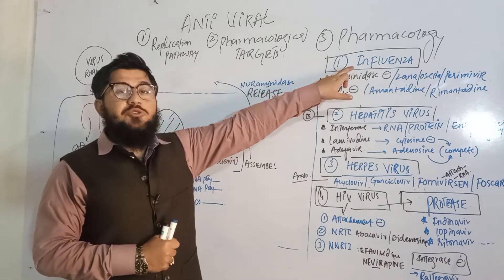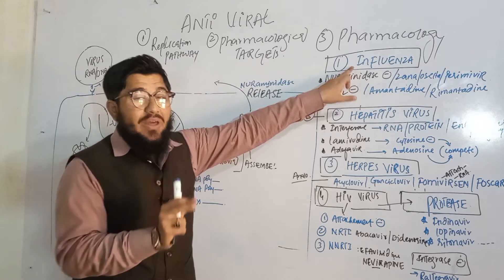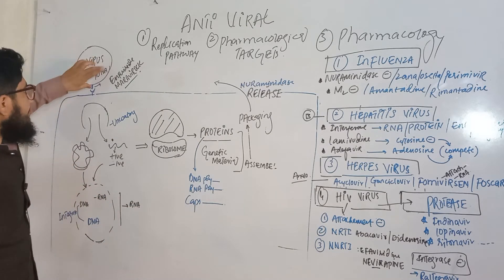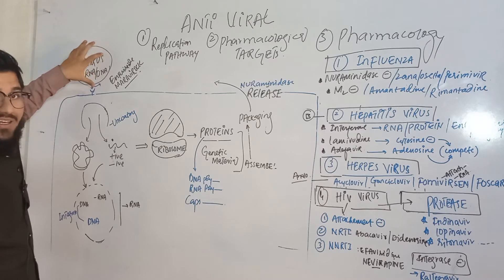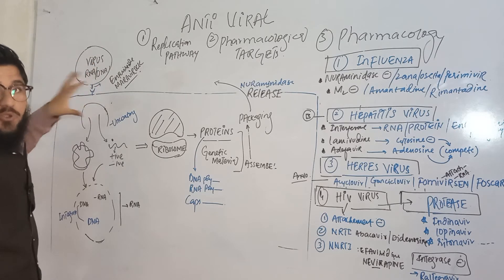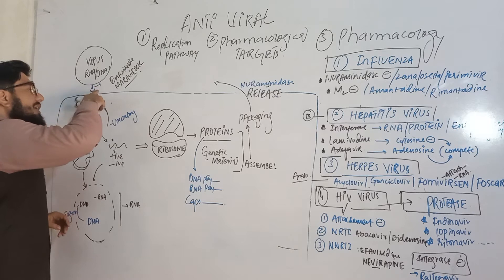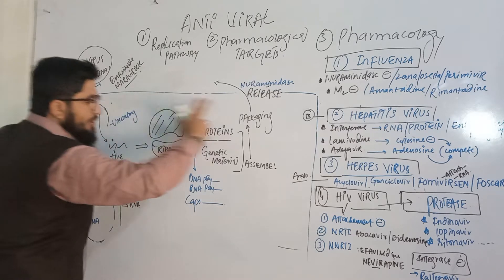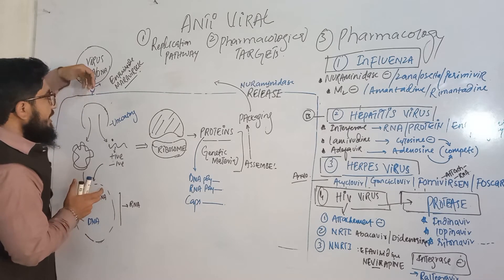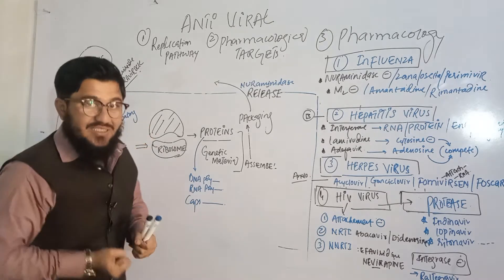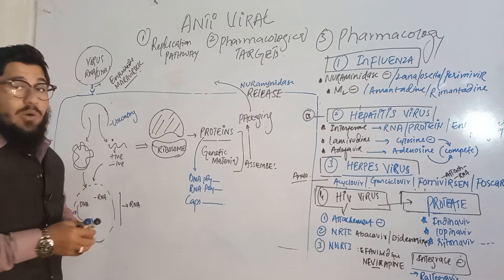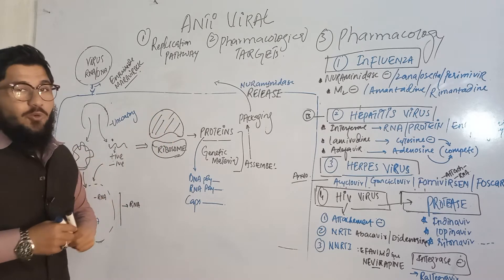Influenza virus is an RNA virus. First, the virus finds a cell by means of its GP spike proteins — proteins located on the outer surface of the virus. Using these GP spikes, it identifies and binds to a receptor on a particular host cell. After binding, there is endocytosis: the virus moves inside the cell. Once inside, the process known as uncoating begins.